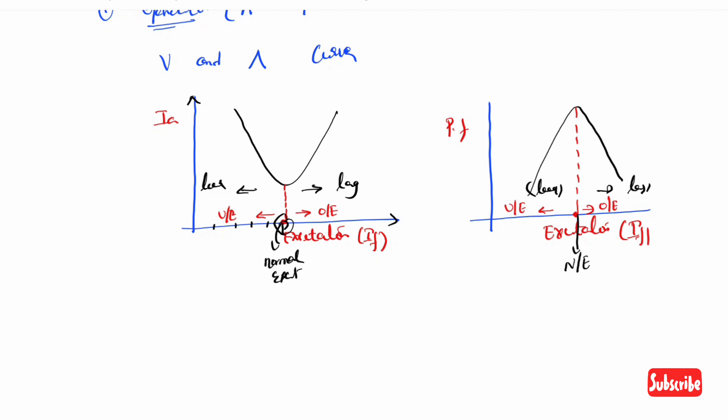Now coming to the motor. For the motor, the curves are also V curve and inverted V curve, which are mirror images of the generator. The E point represents normal excitation with unity power factor.